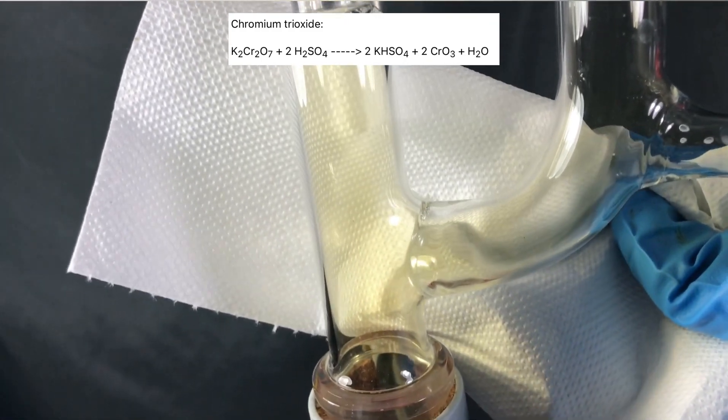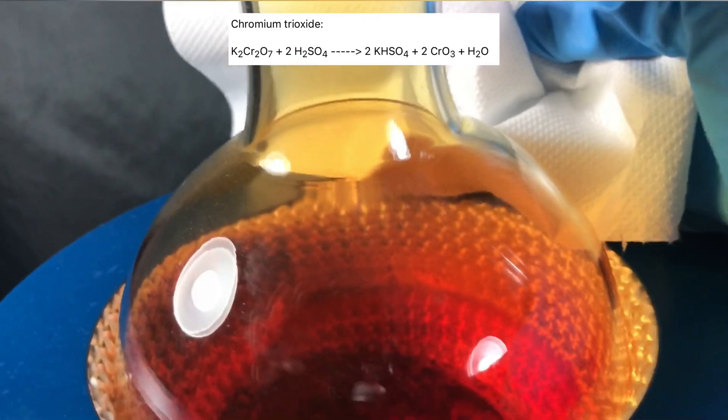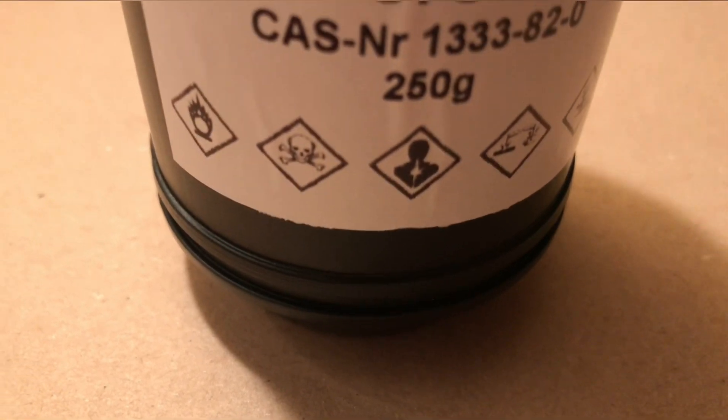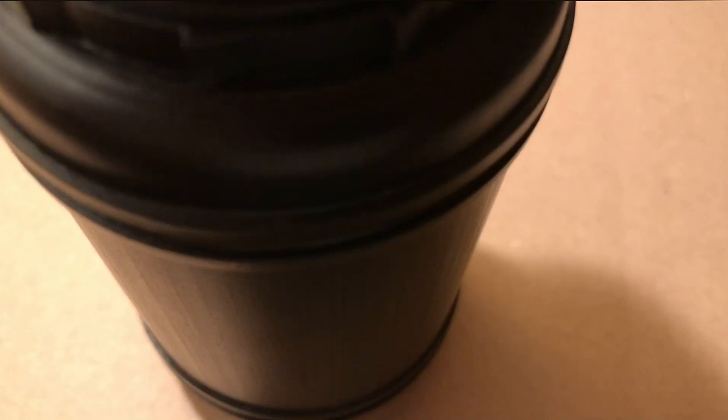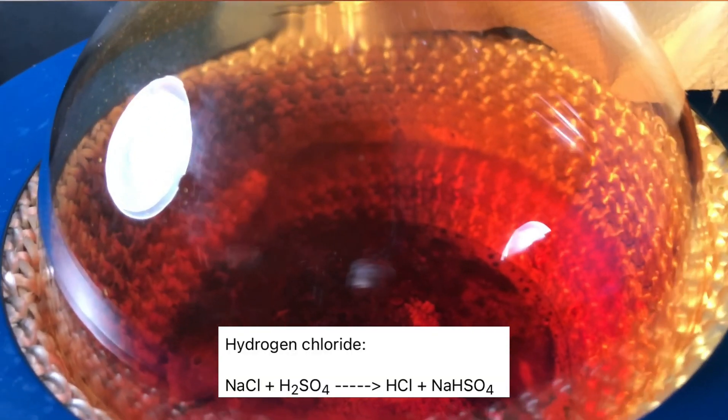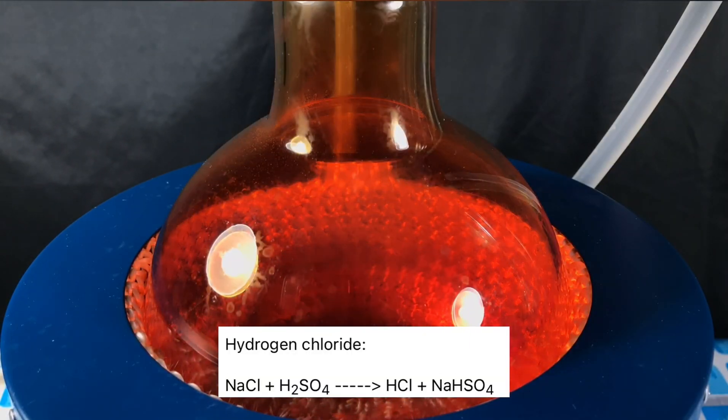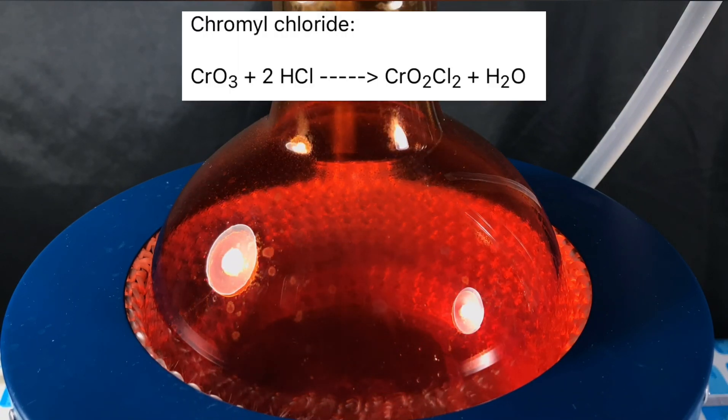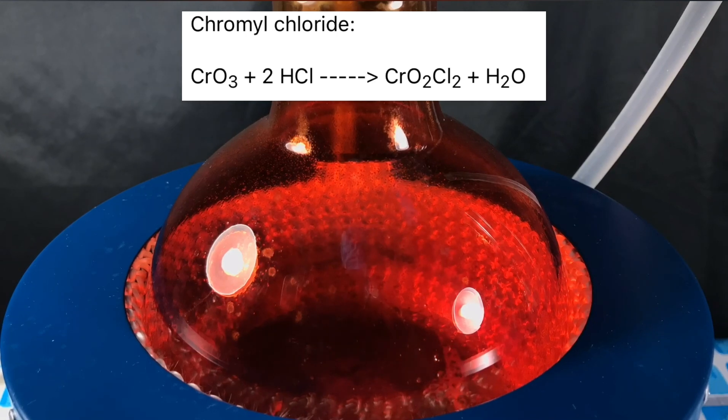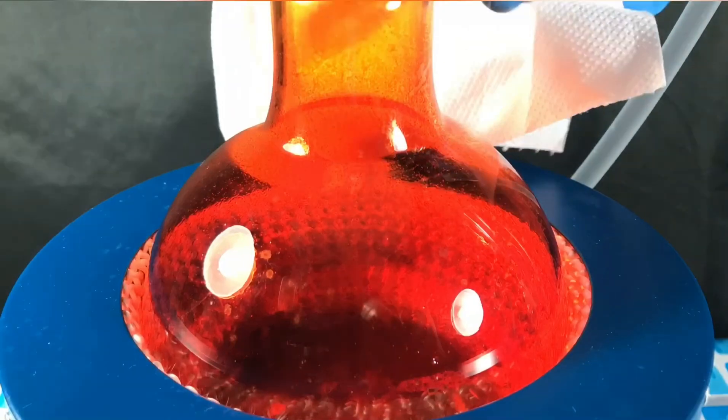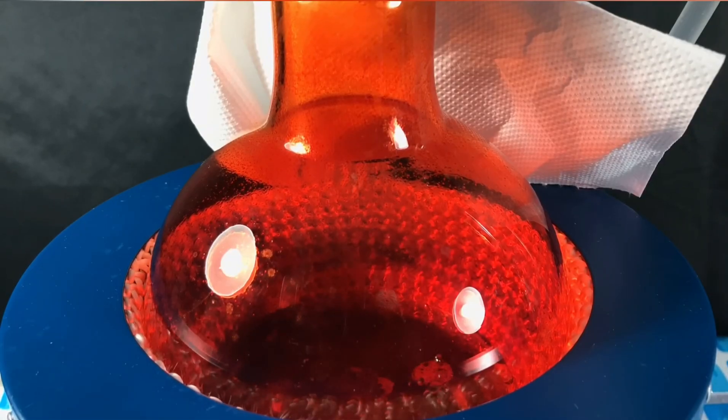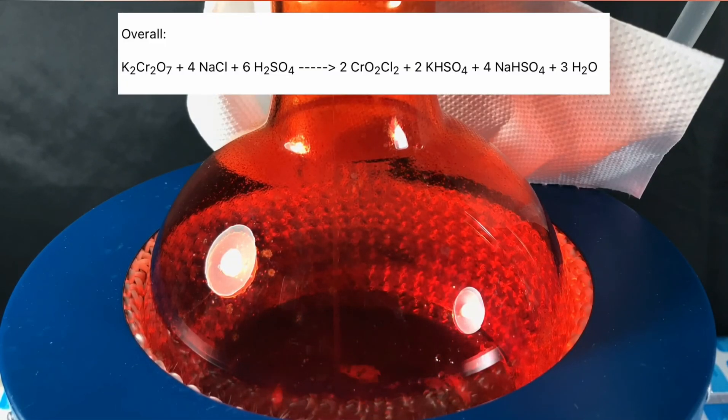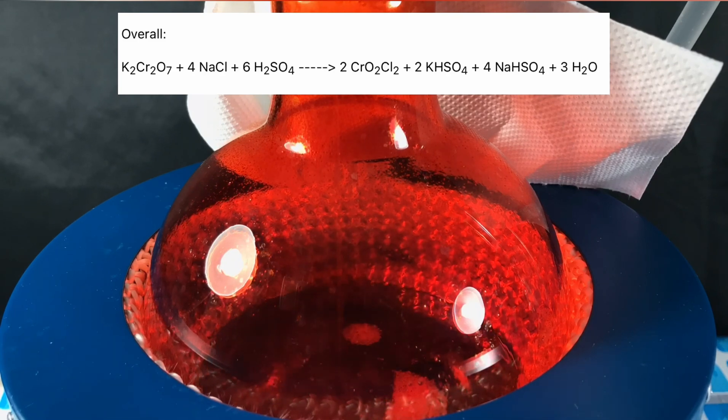At first the potassium dichromate reacts with sulfuric acid to form potassium bisulfate, chromium trioxide and water. You are probably interested in what pure chromium trioxide looks like. Well, I have it, so let me show it to you. Pure chromium trioxide is red solid. At the same time hydrogen chloride is produced. The chromium trioxide and hydrogen chloride then react to form chromyl chloride and water. Because chromyl chloride is quickly hydrolyzed by water, a large excess of sulfuric acid was used to prevent that. All reactions taking place can be summed up to what you see above.